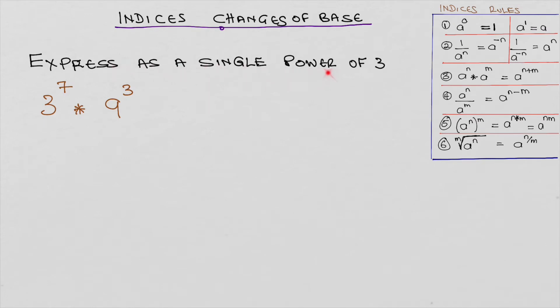Express as a single power of 3. This is 3 to the power of 7 times 9 to the power of 3.